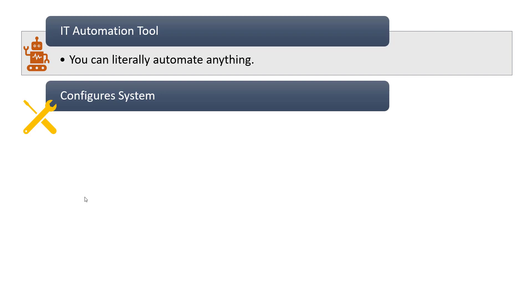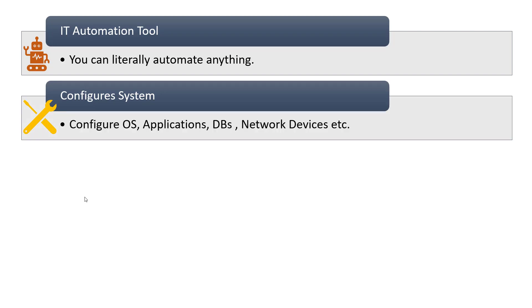Other than that, you can also use Ansible to configure systems — configure operating systems, application databases, network devices, firewalls — there are a lot of things you can do. If I start to name all of them it is going to be a very long video.